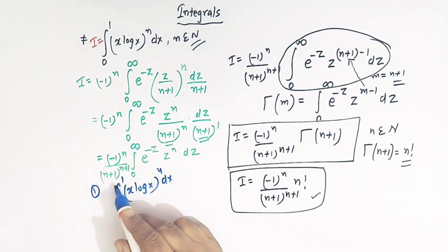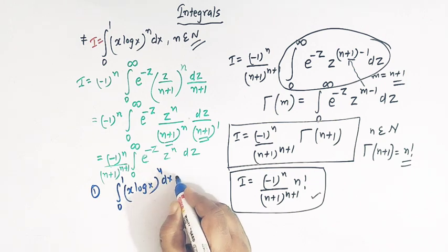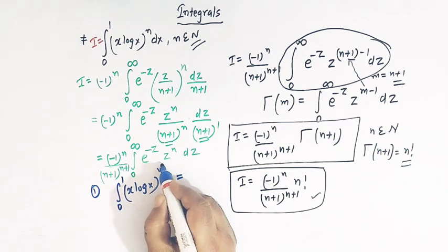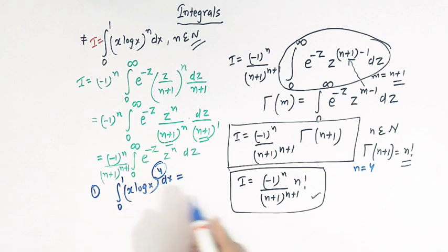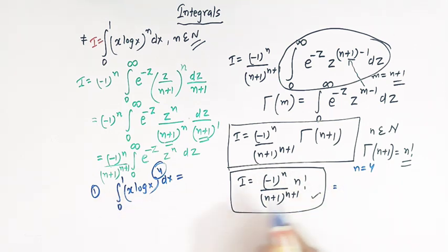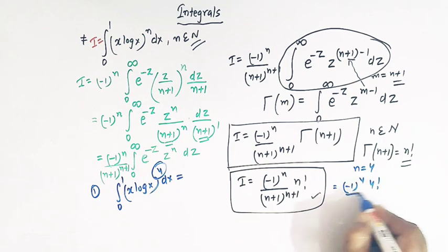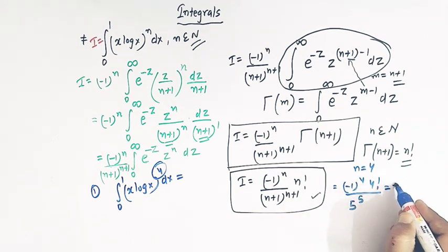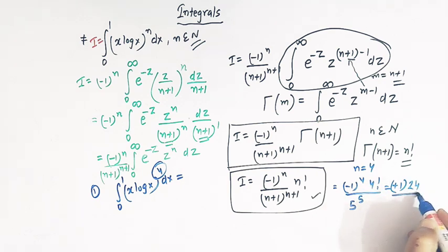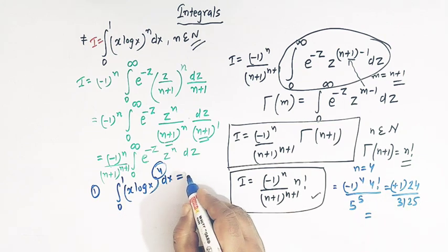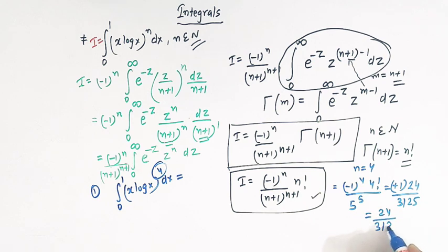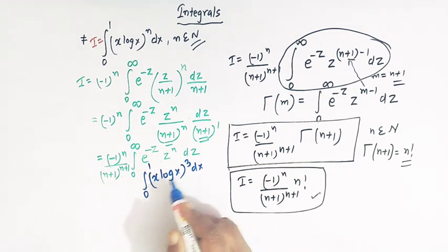Now suppose we have to find the value of the integral from 0 to 1 of x times (log x) raised to 4. Comparing with our result, n equals 4, which is a natural number. Substituting n equals 4: the value is (minus 1) raised to 4 times 4 factorial divided by (4+1) raised to (4+1). Since (minus 1) raised to 4 equals 1, 4 factorial equals 24, and 5 raised to 5 equals 3125, the value is 24 divided by 3125.